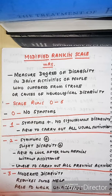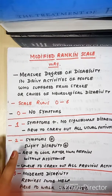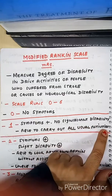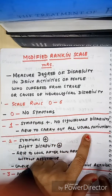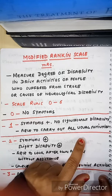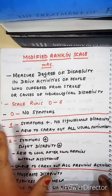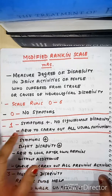This scale runs from 0 to 6, in which 0 means no symptoms and 6 means death. Grade 1 means the patient has some symptoms but there is no significant disability — the patient is able to carry out all usual activities. When you examine the patient, they do not have any signs but they have some symptoms.